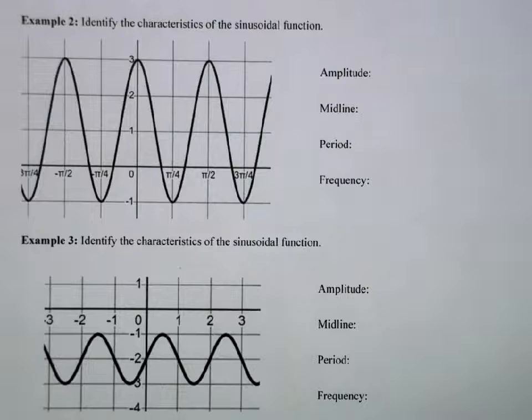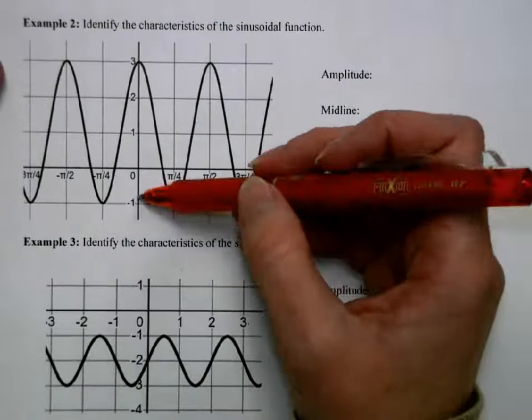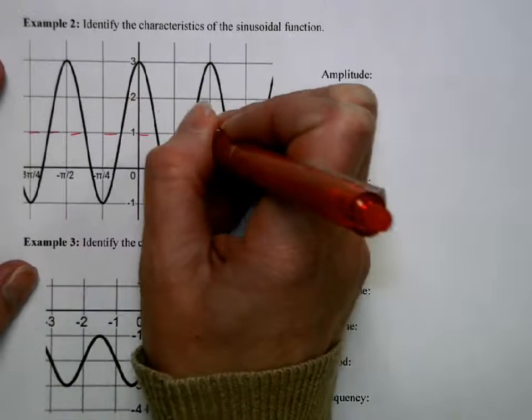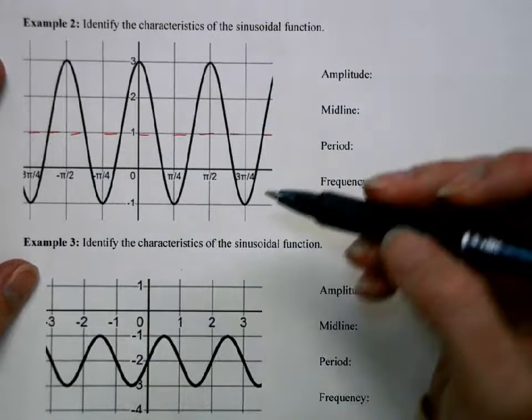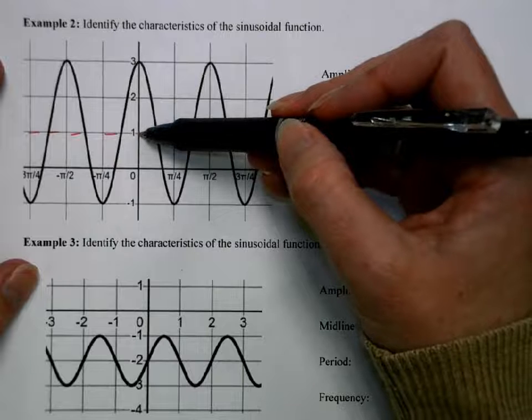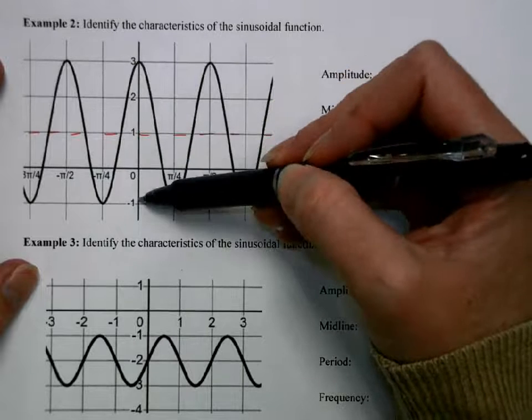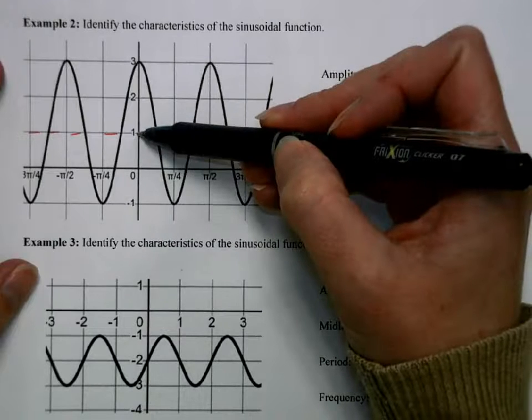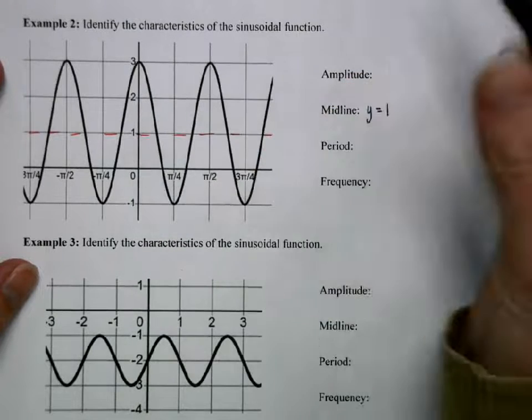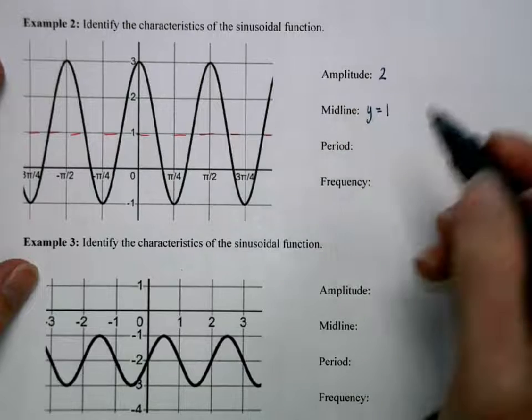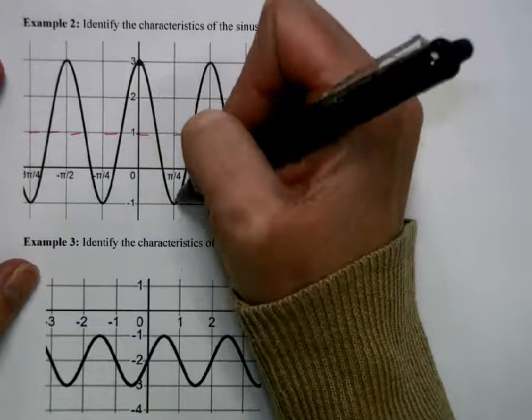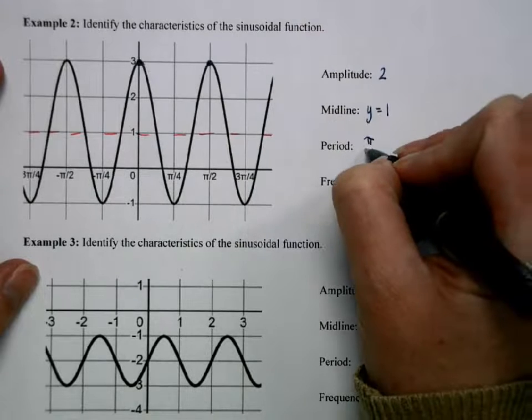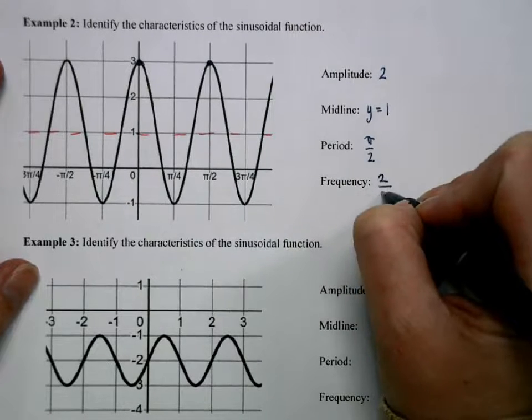Next one. This one isn't centered at the x-axis. So the middle is right there. So my amplitude is the distance from that midline to the top or midline to the bottom, the midline being y equals 1. So the amplitude going from 1 to 3 or from 1 to negative 1 is 2. The period, start at that maximum, and at this maximum is going to be π over 2, which means the frequency is 2 over π.